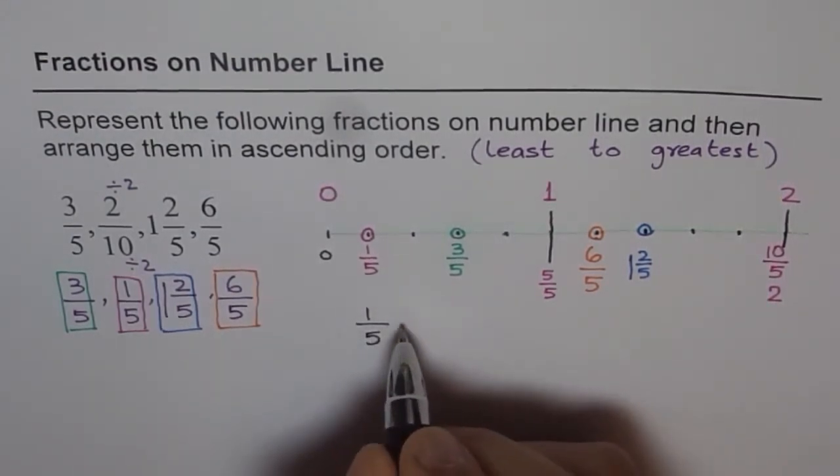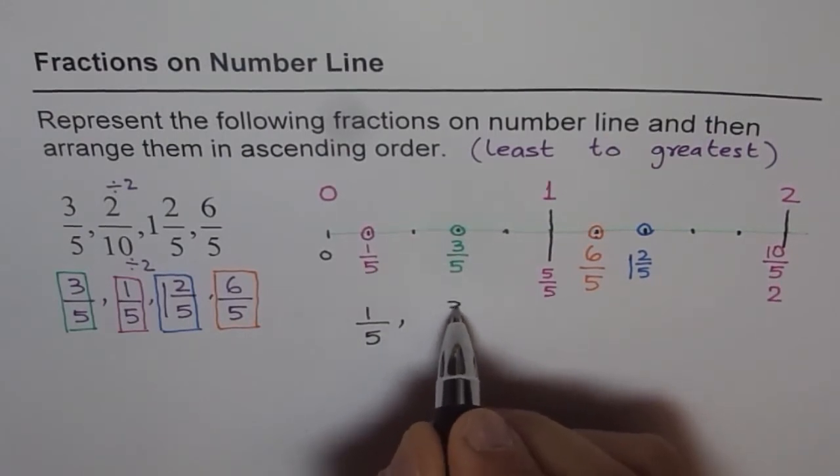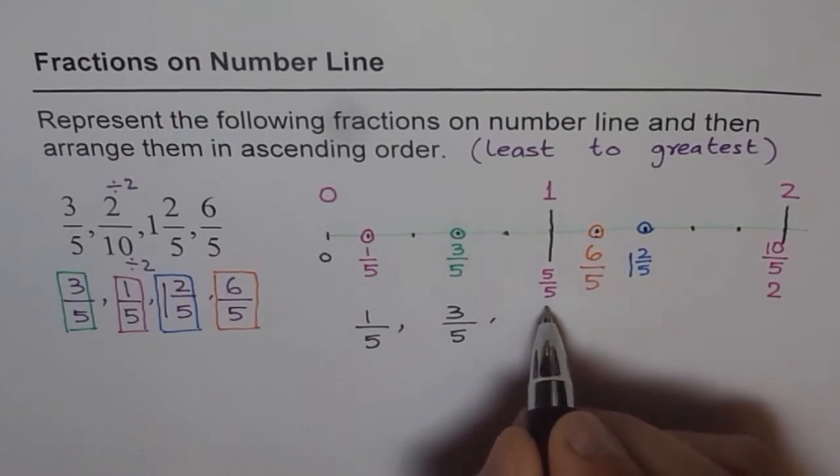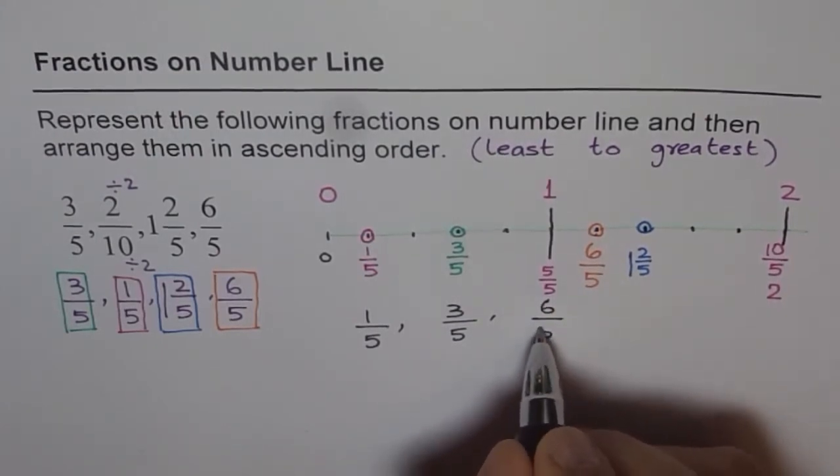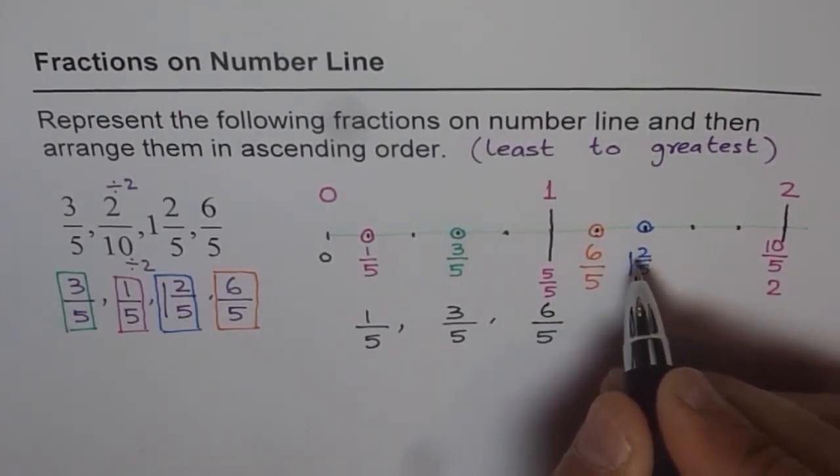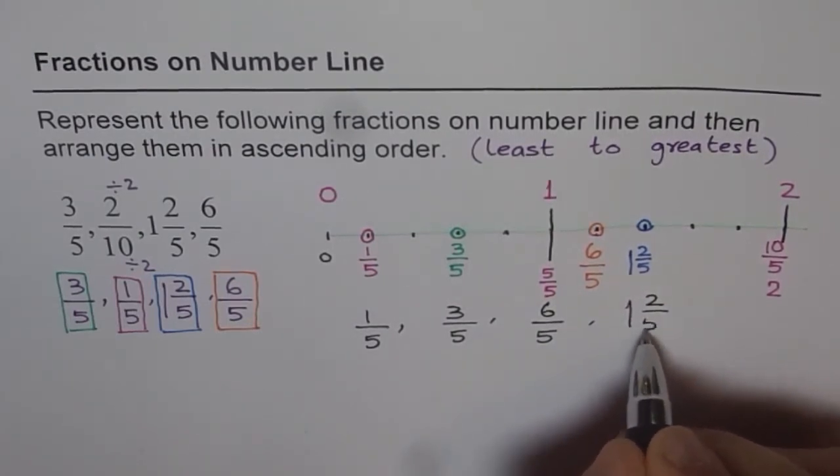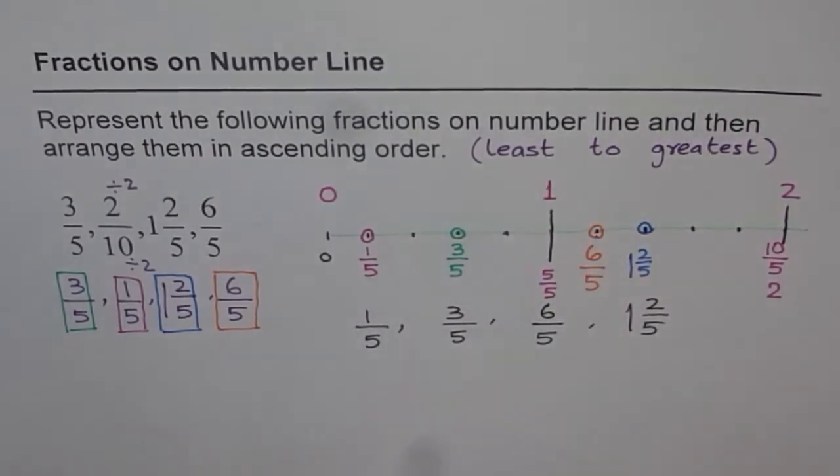So our answer will be 1 out of 5. That is the least. And the next is 3 out of 5. And then we have 6 out of 5. And then we have 1 whole and 2 out of 5. So that is how we can arrange our fractions from least to greatest or from lowest to highest or in the ascending order.